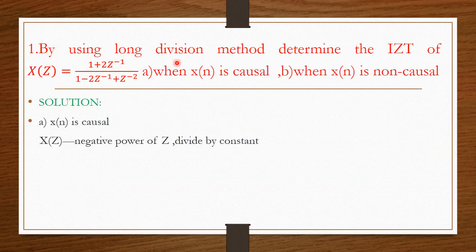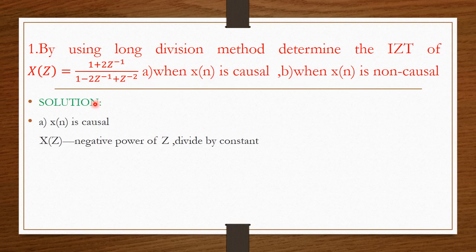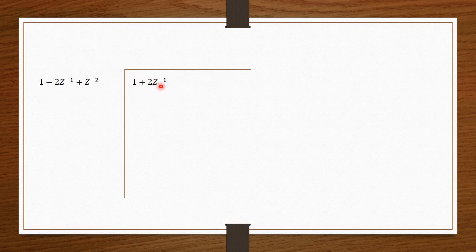First problem: by using long division method, determine the inverse Z transform of X of Z equal to (1 plus 2Z inverse) divided by (1 minus 2Z inverse plus Z power minus 2). Subdivision A: when X of N is causal. Subdivision B: when X of N is non-causal. For subdivision A, X of N is causal and X of Z is expressed in negative powers of Z, so we must divide starting from the constant value.